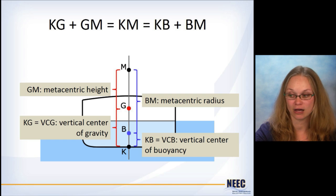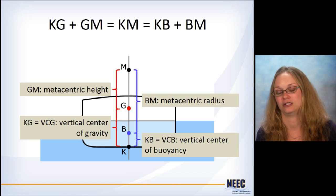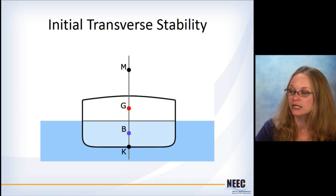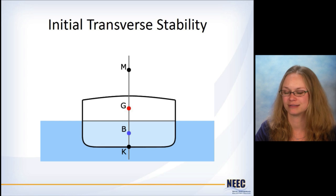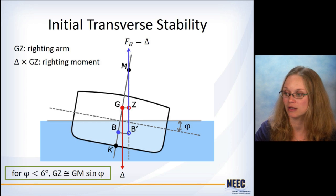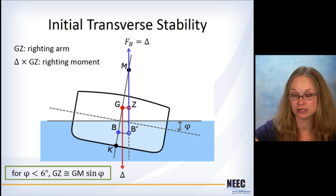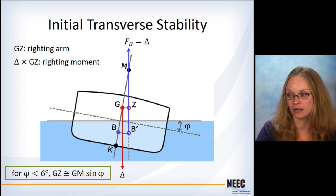And you get GM by using this stuff. If you calculate KB and BM from your hydrostatics program, you can get KG. You then calculate GM. GM is important because that is going to be our measure for our initial transfer stability. So if you remember this picture here where we take the ship and we tilted it over a little bit.